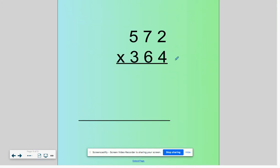For our next problem, I'm going to walk you through step by step. Now it's a 3-digit by 3-digit. Start with your 4. 4 times 2 is 8. 4 times 7 is 28. Put our 8, carry your 2. 4 times 5 is 20, plus 2 is 22.